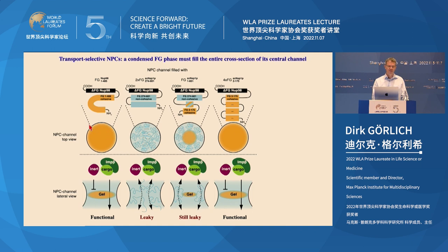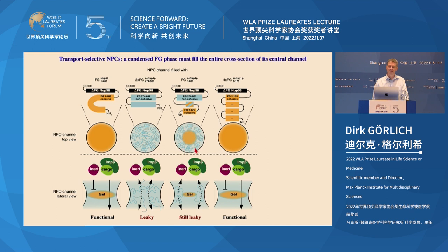To summarize: if the entire cross-section of the central nuclear pore channel is filled with a cohesive FG phase, we have functional nuclear pore complexes. If it is filled with a non-cohesive phase, the pore is leaky — importins can attempt active import but cargo is not retained and diffuses back down the concentration gradient. If a domain is cohesive at the N-terminus but non-cohesive at the C-terminus, leaky areas dominate and make the pore leaky. Using only cohesive material to fill the entire cross-section restores a functional nuclear pore complex. This set of experiments makes a strong case that the selective FG phase is required to make a functional nuclear pore complex.